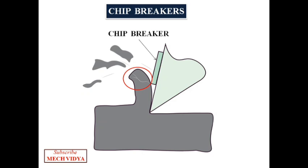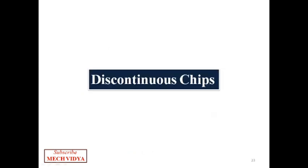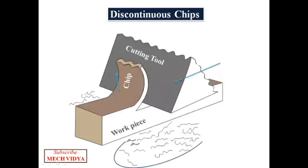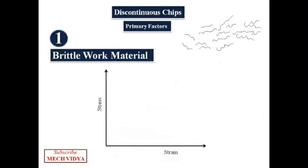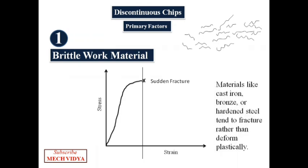The last type of chip is the discontinuous chips. Discontinuous chips are characterized by small fragmented chips. The prime factors: first is brittle metal. The stress-strain diagram of brittle metal shows these materials fracture suddenly, unlike the ductile material we saw earlier which has a clear plastic deformation zone. Whenever we apply stress on materials like cast iron, bronze, or hardened steel, they fracture immediately without plastic deformation, and thus we get small segmented chips.